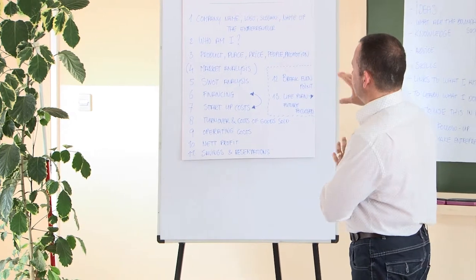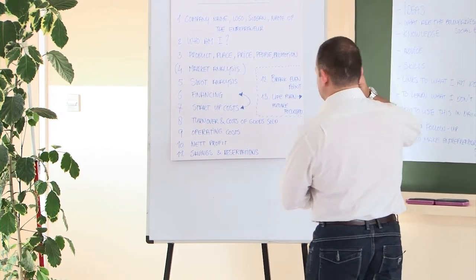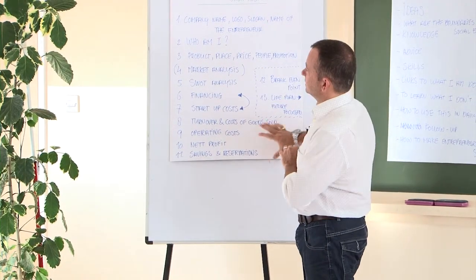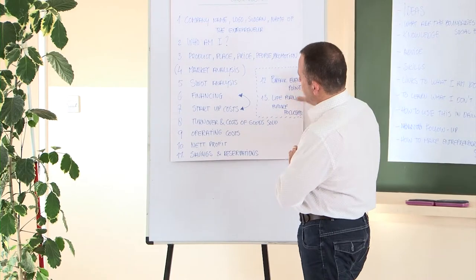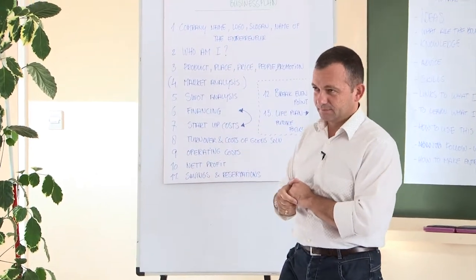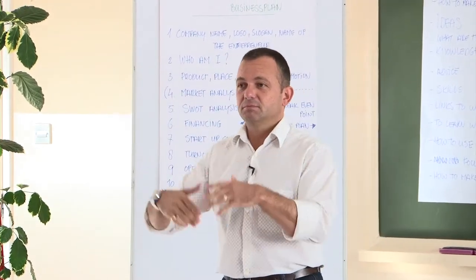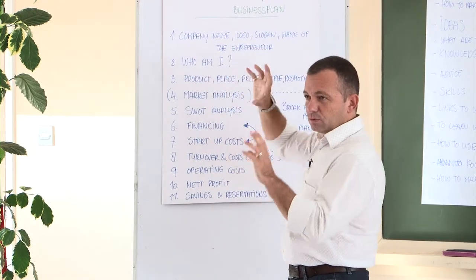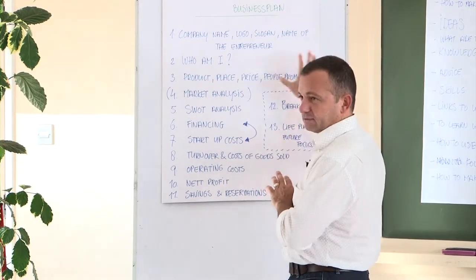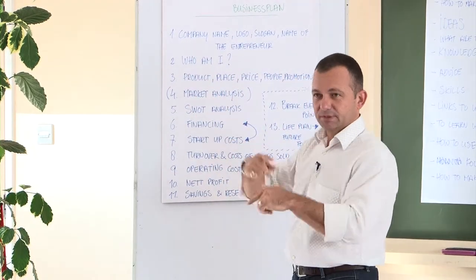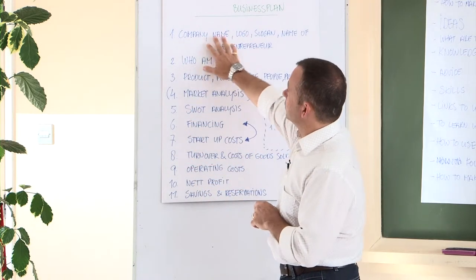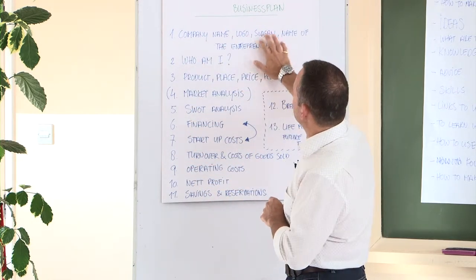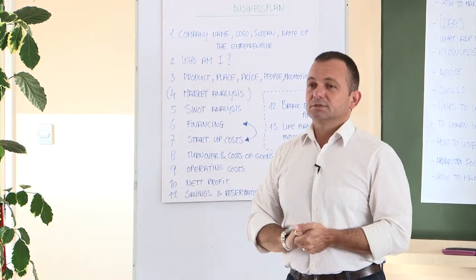Just to show how a business plan could look like, I wrote down these things. These could be the chapters in a business plan. So if you make a business plan, you can start with the company name, a logo, a slogan. You already know how it would look like — company name, logo, slogan, and name of the entrepreneur — because you're going to present your business plan.